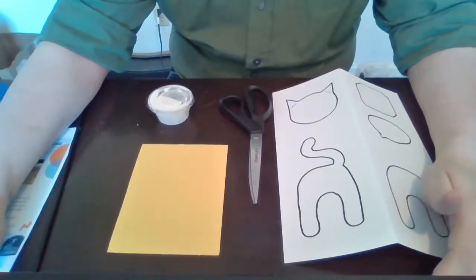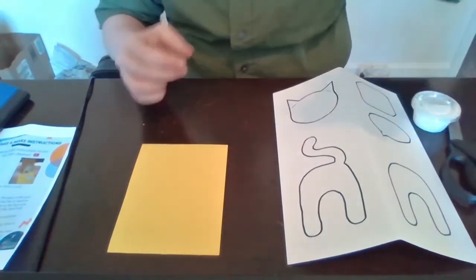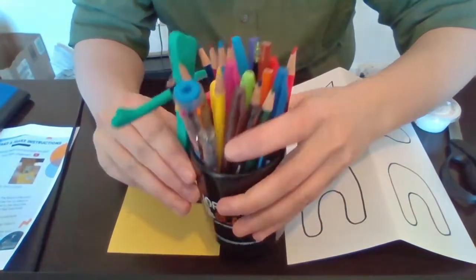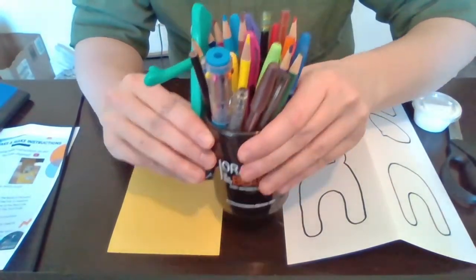The things that you will need are a pair of scissors, some glue, and some coloring pencils or markers, something to color in your cat.